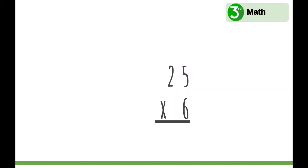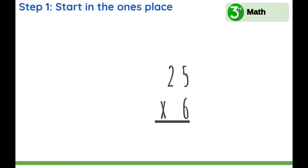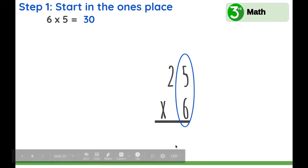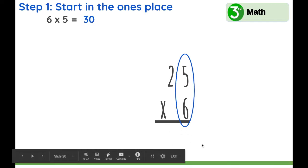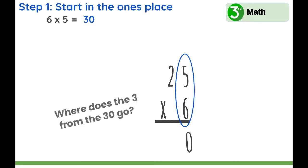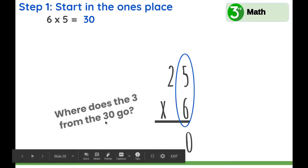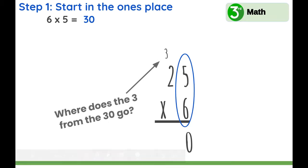25 times 6. Do you remember the first step? Where are we going to start? Start in the ones place: 6 times 5. What is 6 times 5? 30. Which number goes right here in the ones place? The zero. And then where does the 3 from the 30 go? To the tens place — yes, we carry it over.